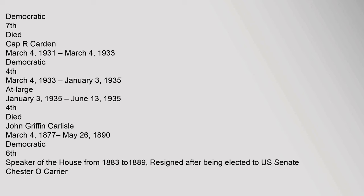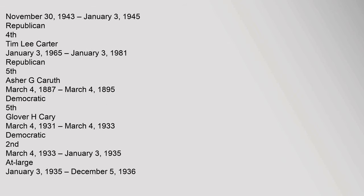John Griffin Carlisle, March 4, 1877 to May 26, 1890, Democratic, 6th, Speaker of the House from 1883 to 1889, resigned after being elected to U.S. Senate. Chester O. Carrier, November 30, 1943 to January 3, 1945, Republican, 4th. Tim Lee Carter, January 3, 1965 to January 3, 1981, Republican, 5th.